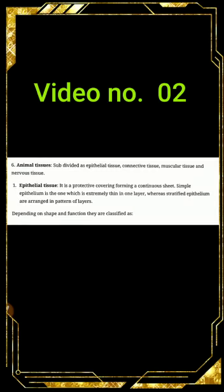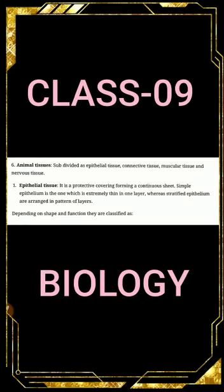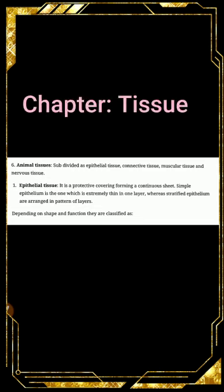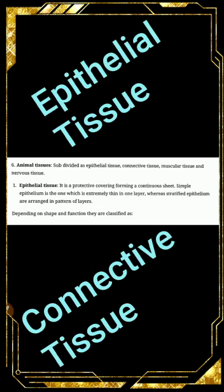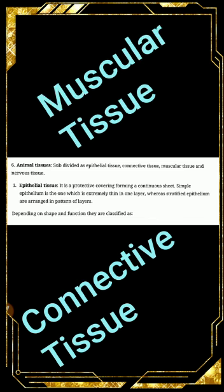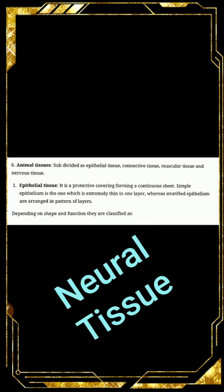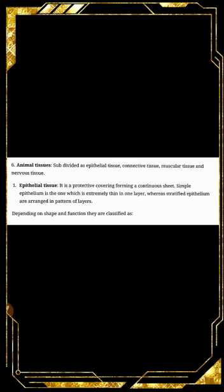Hello students, this is our second video of Class 9th Biology Chapter Tissue. In our last video we discussed about plant tissue and their classification in detail. Now in this video we are going to study about animal tissue — types of animal tissues: epithelial tissues, connective tissues, muscular tissues, and neural tissues. So let's start with animal tissue.